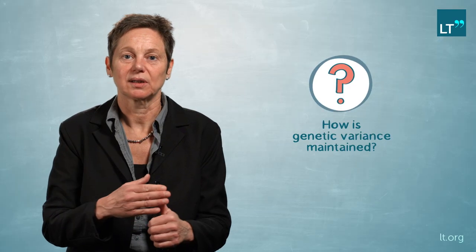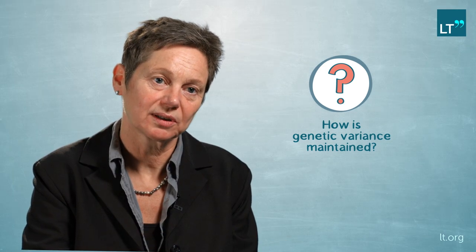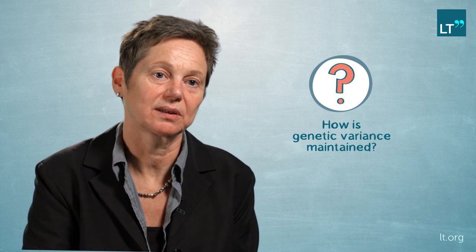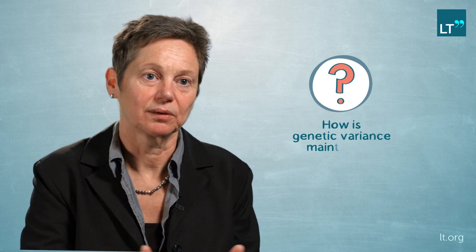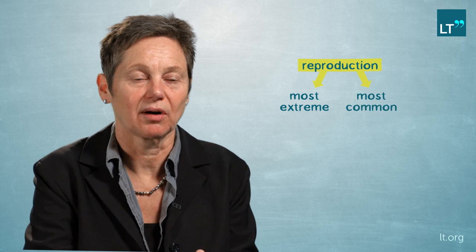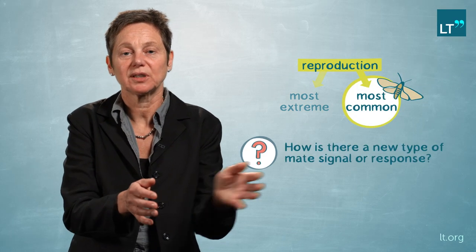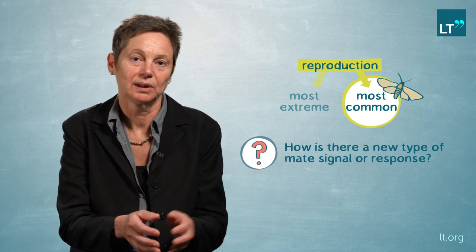We are seeing a lot of variants within species, and we would like to understand how this genetic variation is maintained. How do the selection forces contribute to the divergence of new species? And that is especially an interesting question when you have stabilizing selection — when species are choosing those mates that are the most common ones. Because how can you then have a change into a new type of mate signal or mate response?